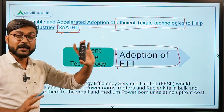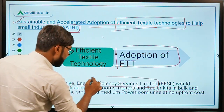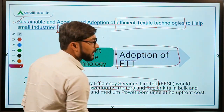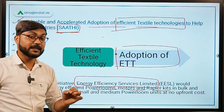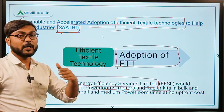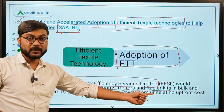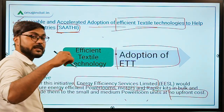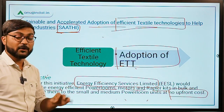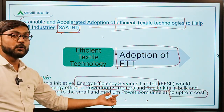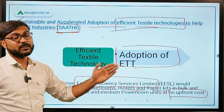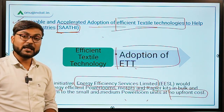Under this scheme, Energy Efficiency Services Limited (EESL), a body under the Ministry of Power, will procure energy-efficient power looms, motors, and rapier kits. These will be provided to small and medium power loom units at no upfront cost.